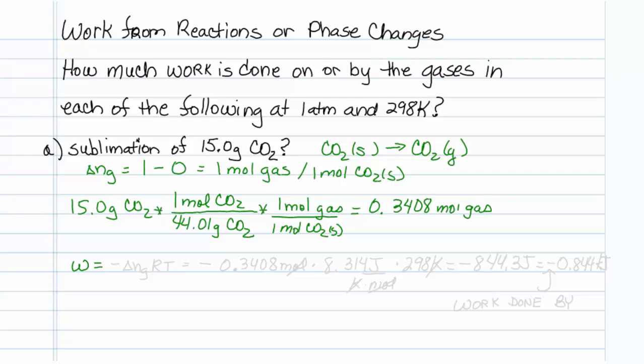Work is equal to minus delta NG RT, so minus 0.3408 moles of gas times 8.314 joules per Kelvin mole times our temperature, which is 298 Kelvin.